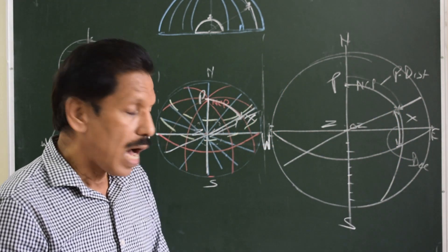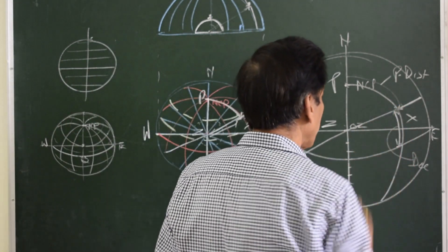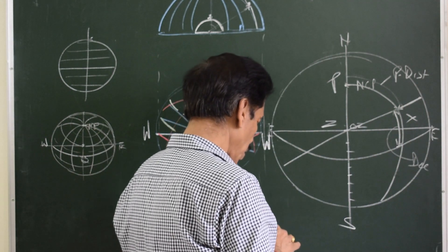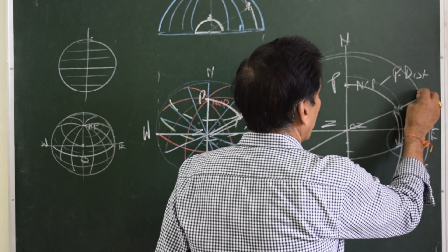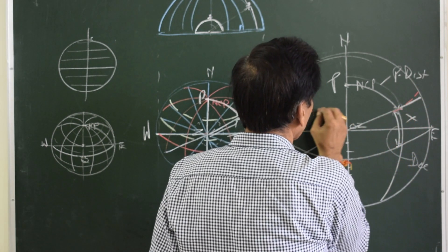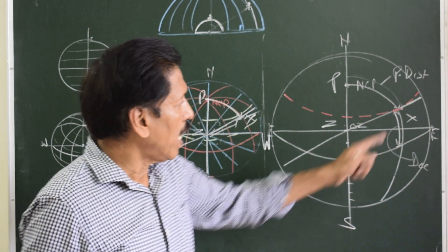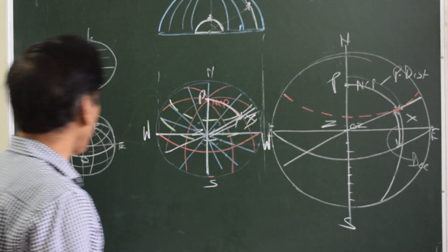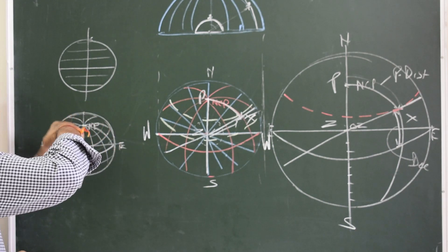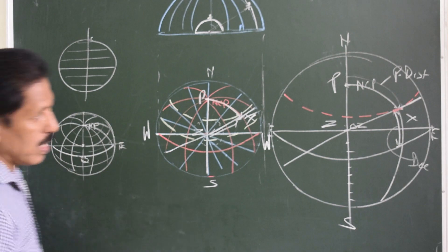Declination is an arc of the celestial meridian passing through the body, between the body and the equinoctial. Before we proceed further, we should also try to see the rising and setting of the body. The body rises here and sets here. This is because the earth spins eastward, and because the earth spins eastward, all the heavenly bodies appear to go from east to west. Likewise, this star will rise here and set here.